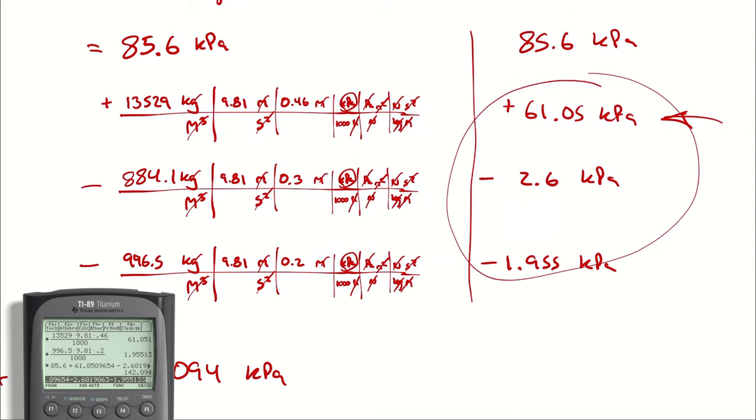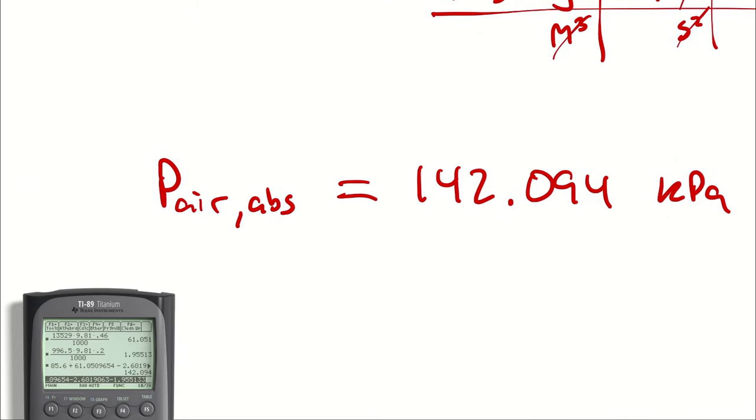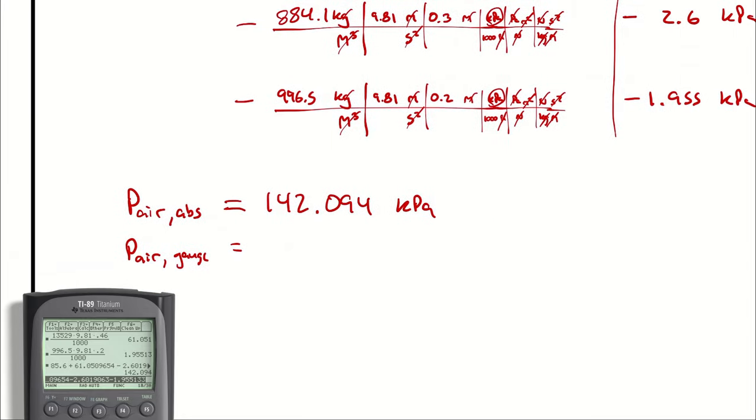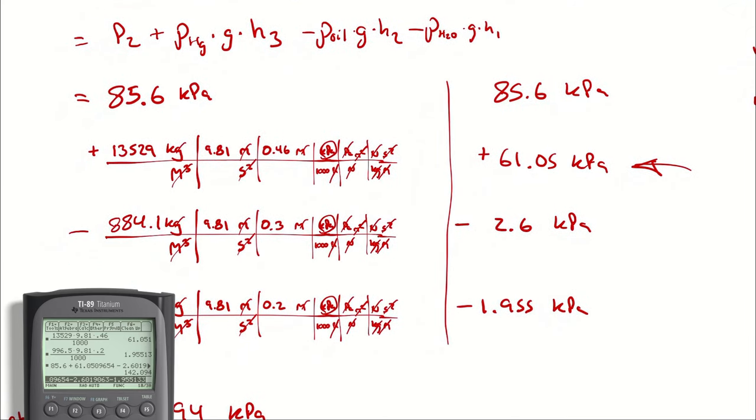And then, once again, I will pose the question, how do we convert this to a gauge pressure? You're right. We subtract 85.6 kilopascals. We do not just always subtract one atmosphere. We subtract the actual atmospheric pressure we have in the problem. You could also think of it like neglecting 85.6 in our calculation. If we were to do that, we would end up with the same result.